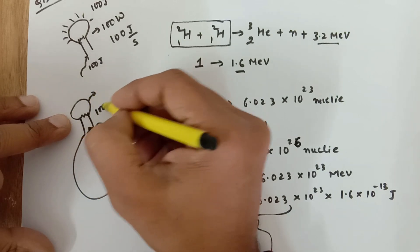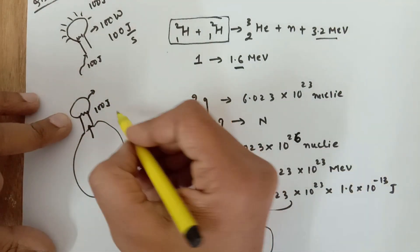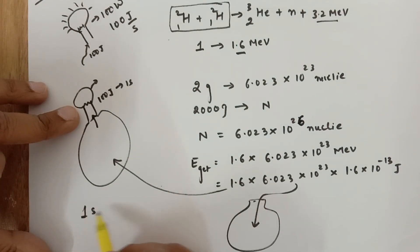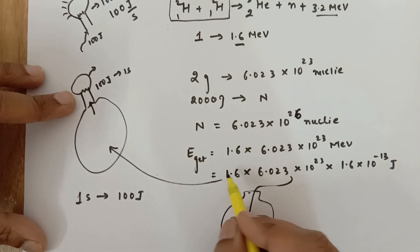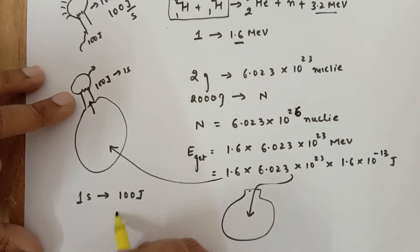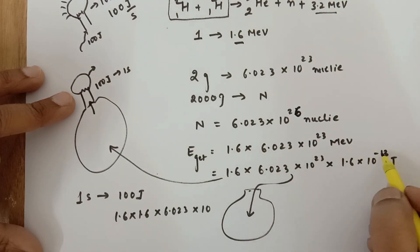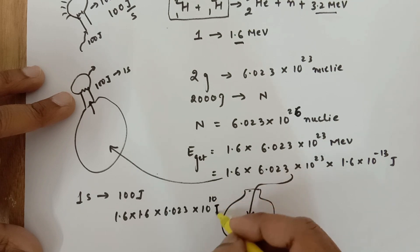This much amount of energy is inside. Out of that, in 1 second this bulb is going to use 100 joules of energy. So for this much amount of energy, that is 1.6×1.6×6.023×10^23, and then this becomes 10 joules.